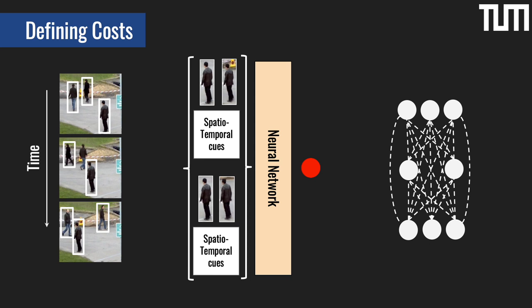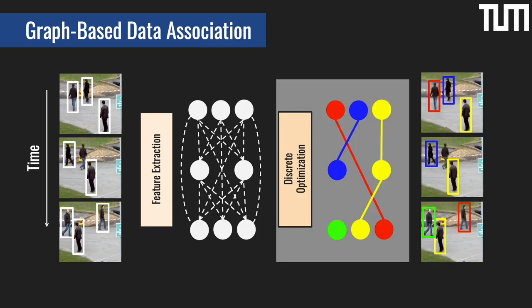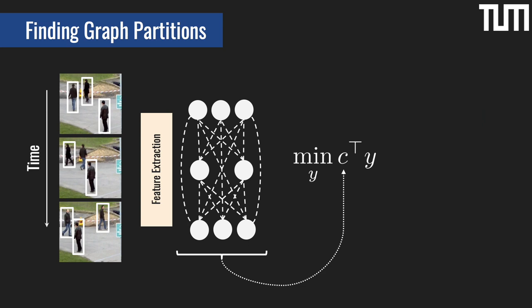One way around this would be to explicitly encode relationships among pairs of edges. However, this would make our optimization problem significantly more complex. This brings us to the second stage of our two-step pipeline: using the edge costs we have defined within an optimization problem. Even without high-order terms, this is an integer optimization problem that can be hard to scale to large instances. Once we start adding higher-order interaction terms, this typically yields an NP-harder optimization problem, which is expensive to even approximate.